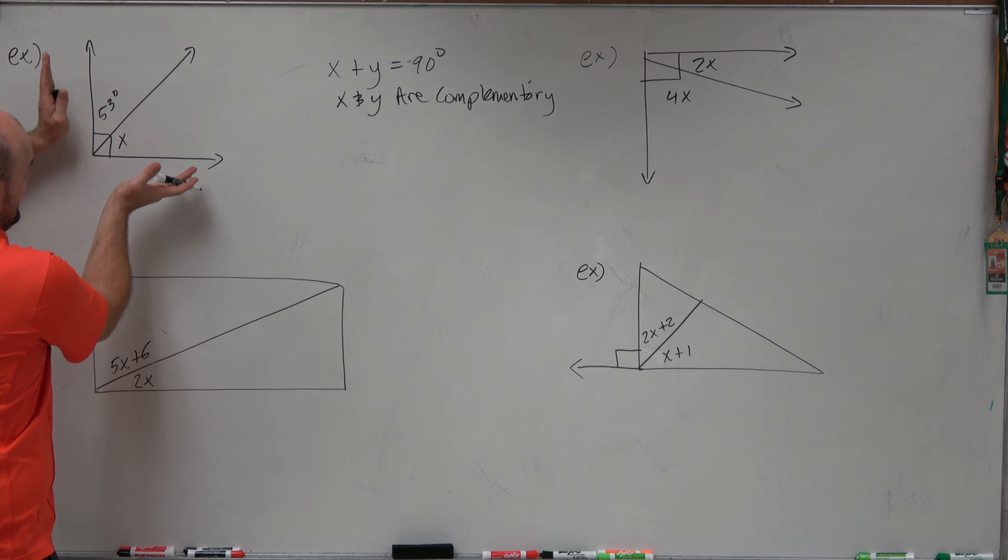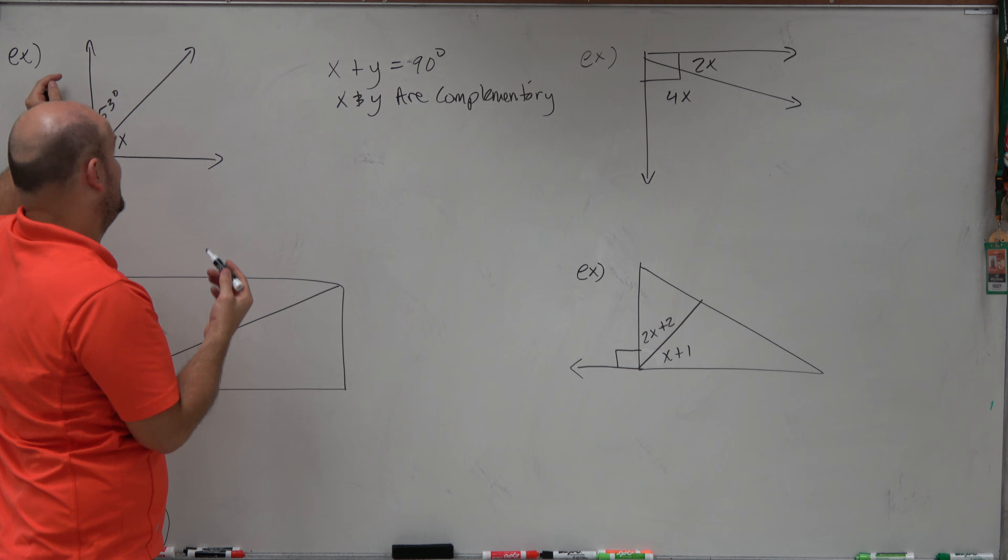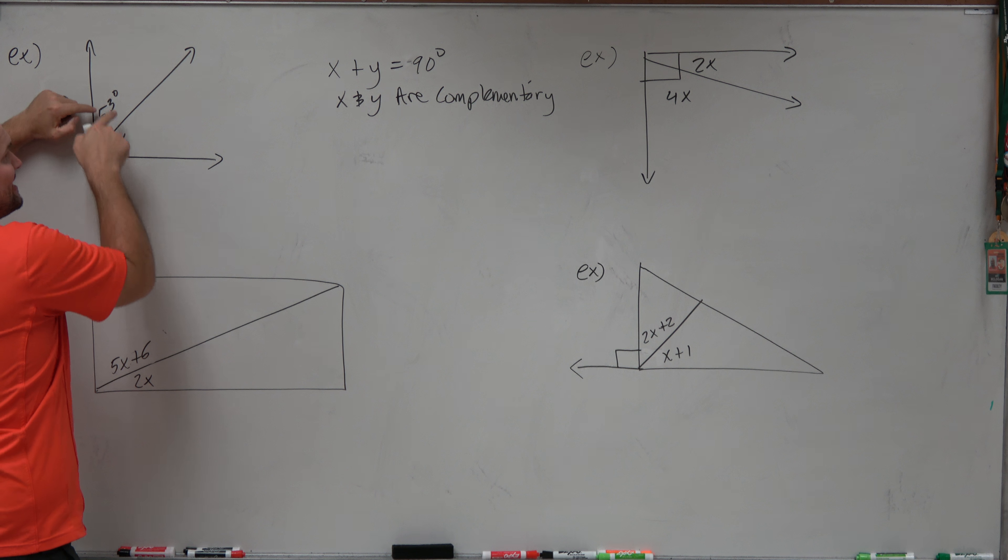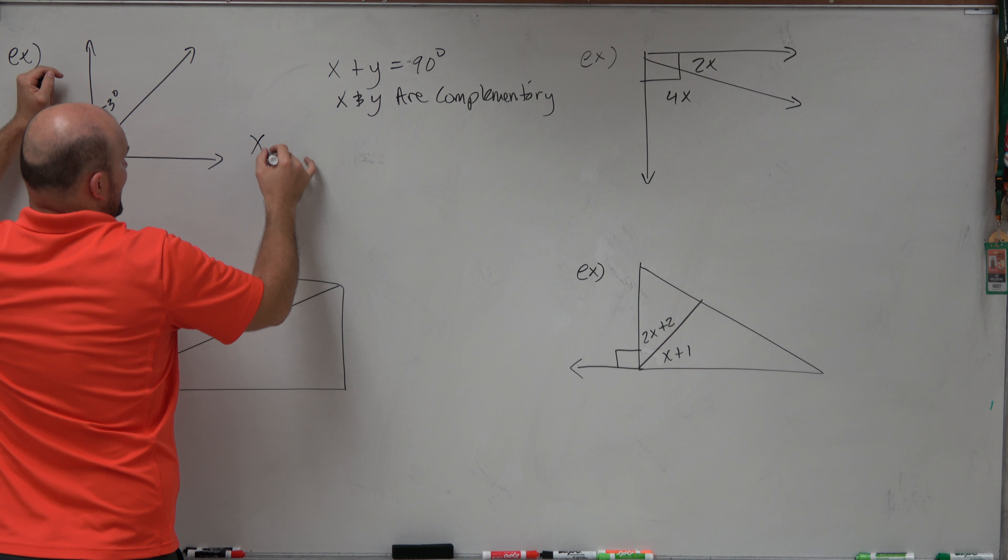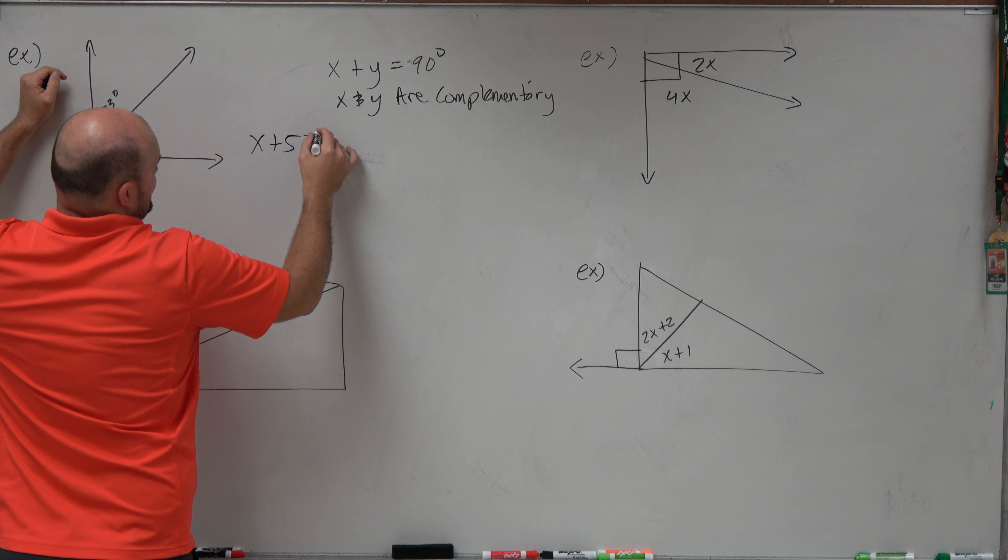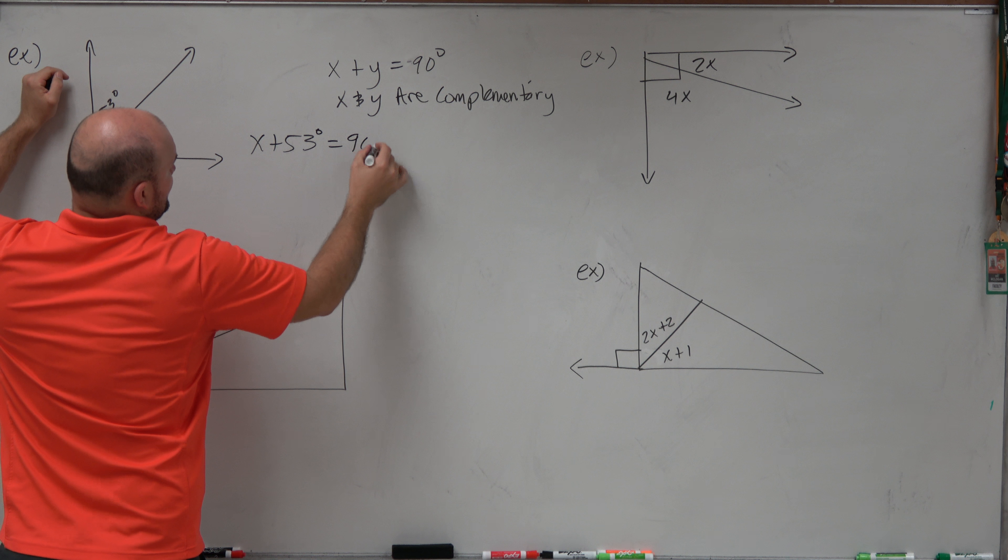So if you look at this example here, we have a right angle. That means this large angle is 90 degrees. So therefore, using angle addition, I know that x plus 53 is equal to 90 degrees. So what value of x is going to make this complementary? So I set up an equation: x plus 53 degrees equals 90 degrees.